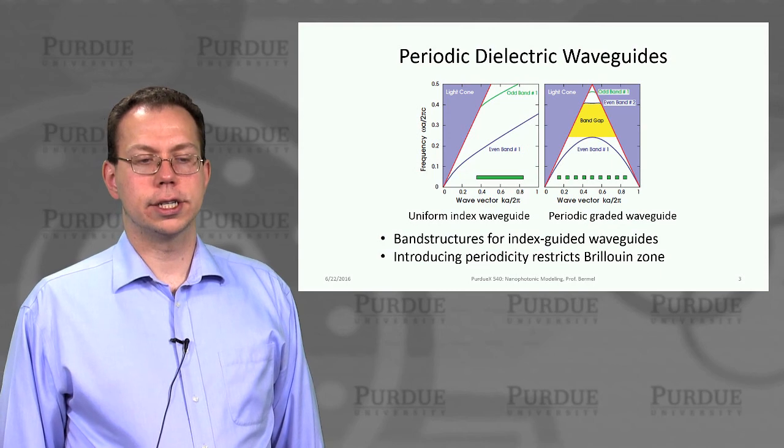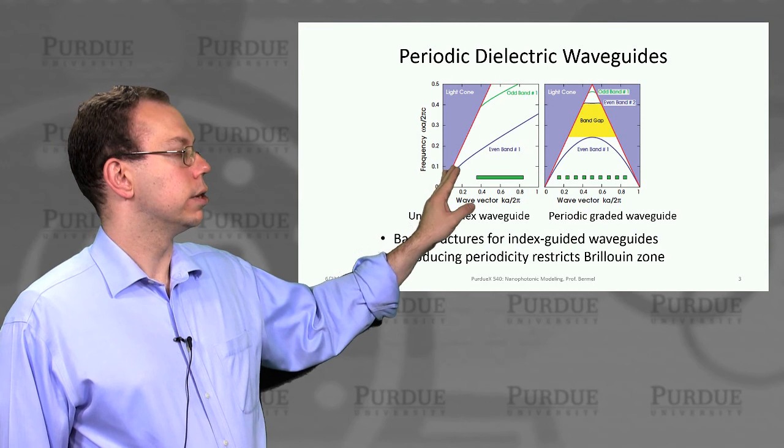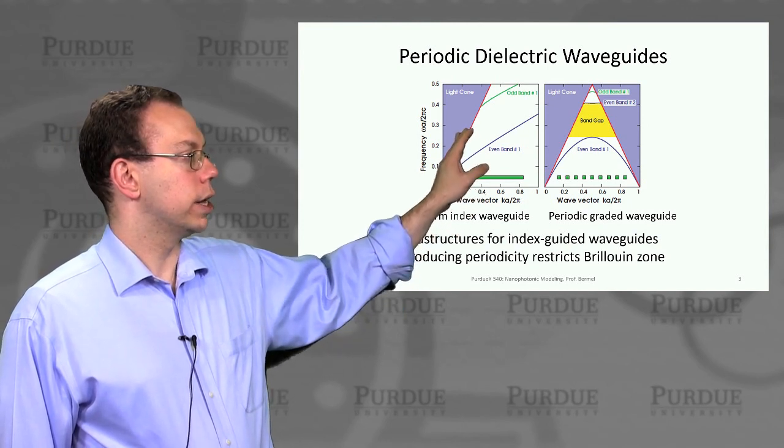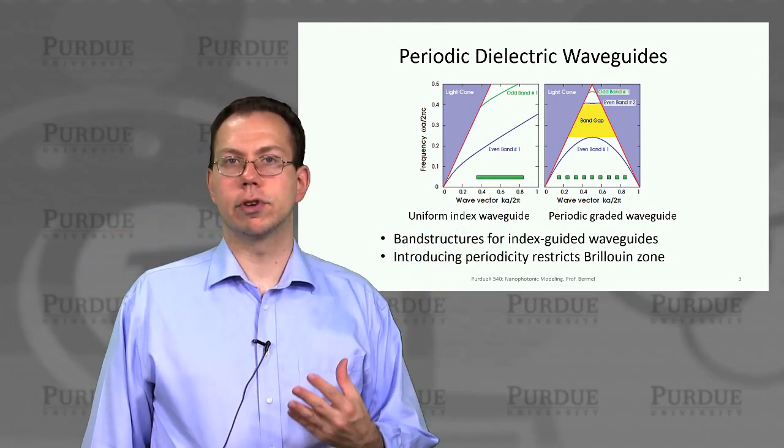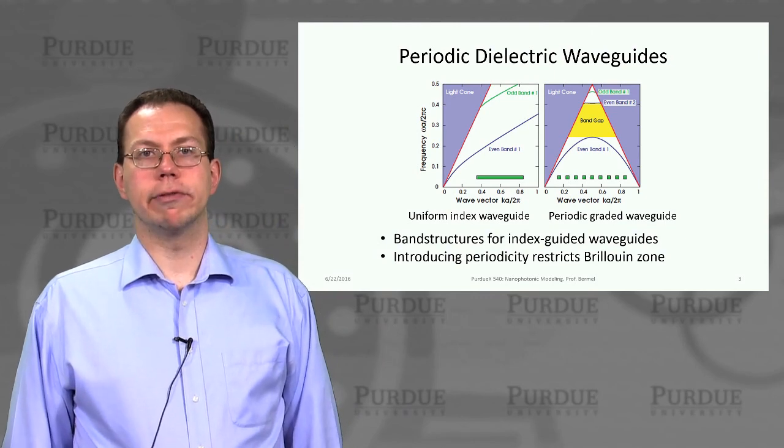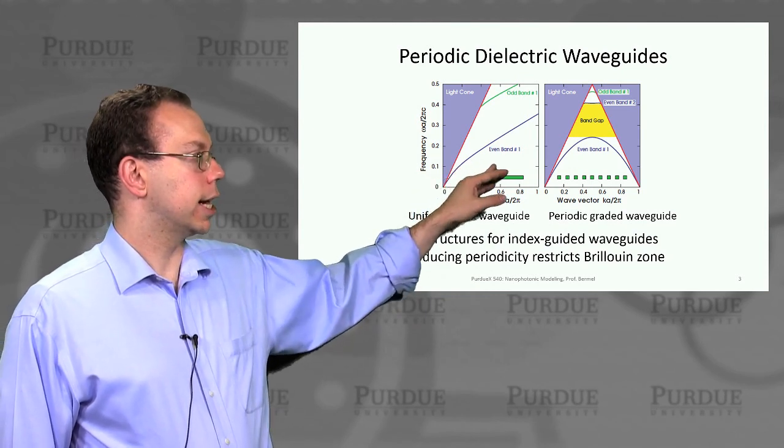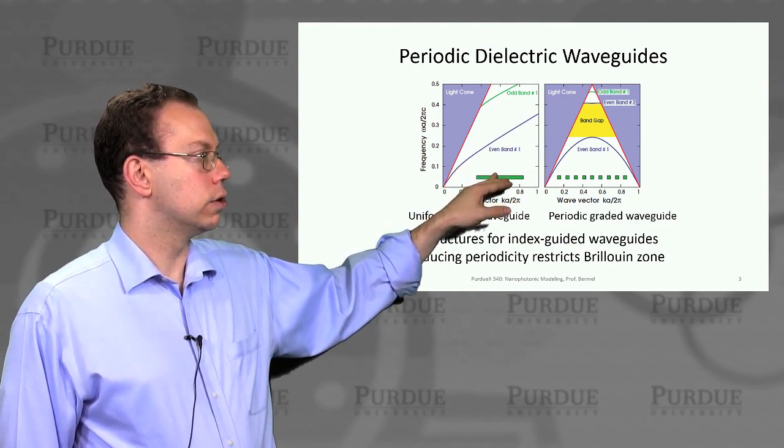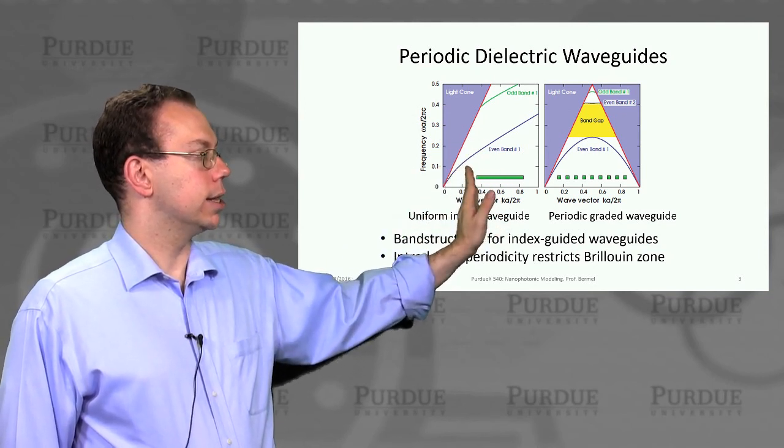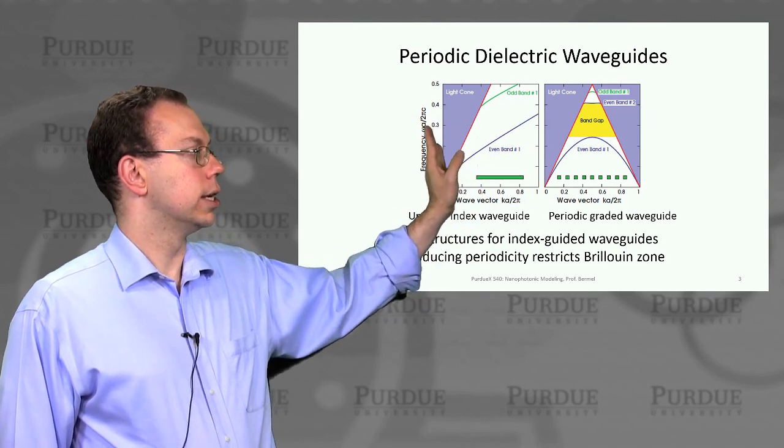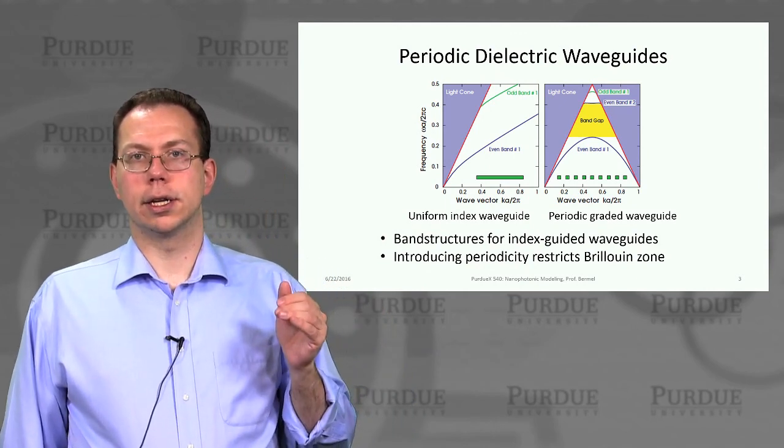And so you can actually understand conceptually how all of this is coming about through starting with just a very simple index guided waveguide. You can understand that we have this so-called light cone region, where when the frequency is greater than a certain threshold wave vector, then the light is not index guided. The threshold wave vector would be a wave vector that can propagate in air. So the maximal wave vector in this x direction that still propagates in air would be the lower bound of this light cone. And so then that means anything that propagates at all of these directions is all within this blue light cone.